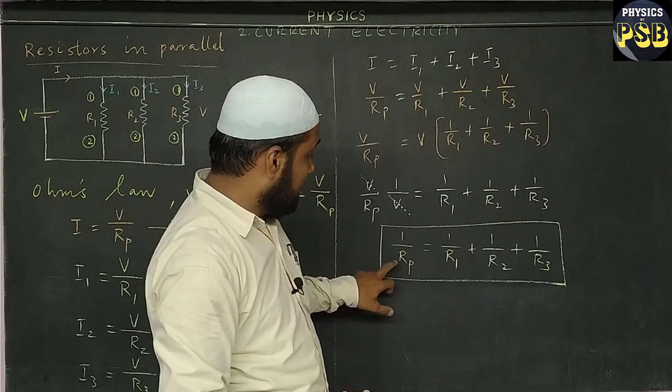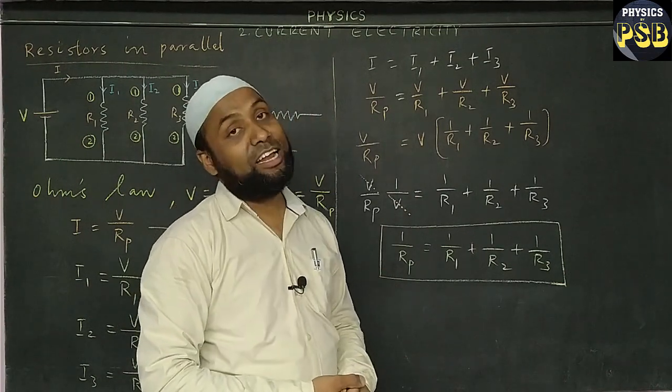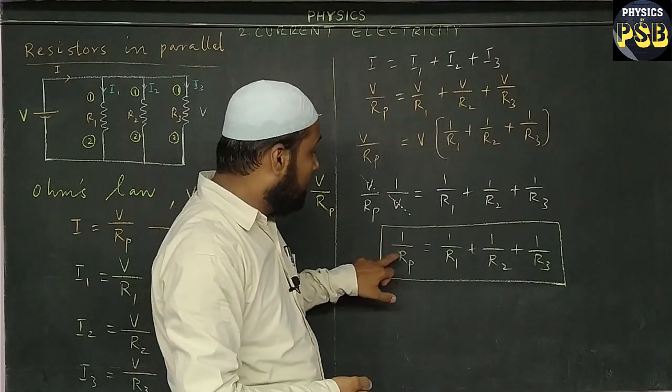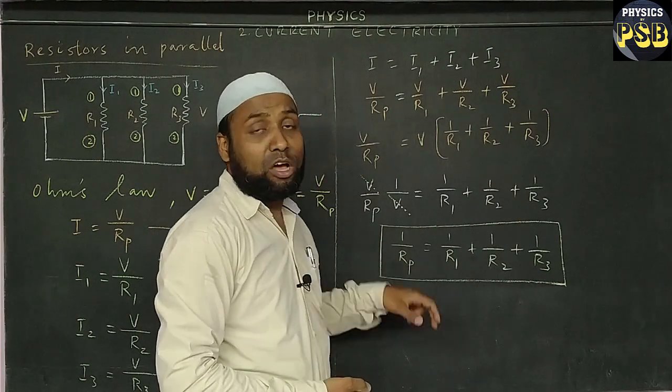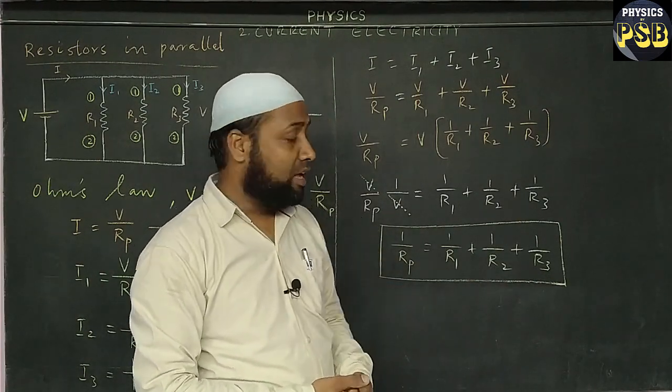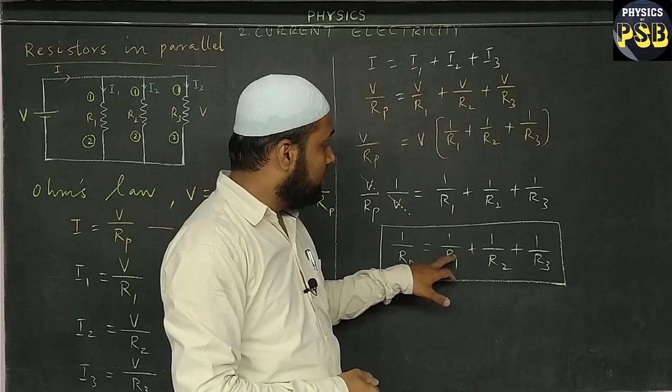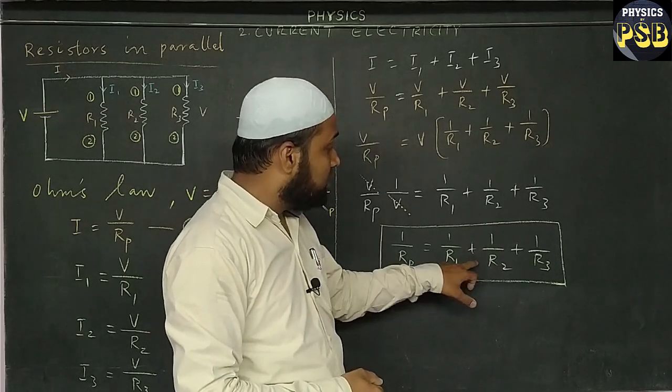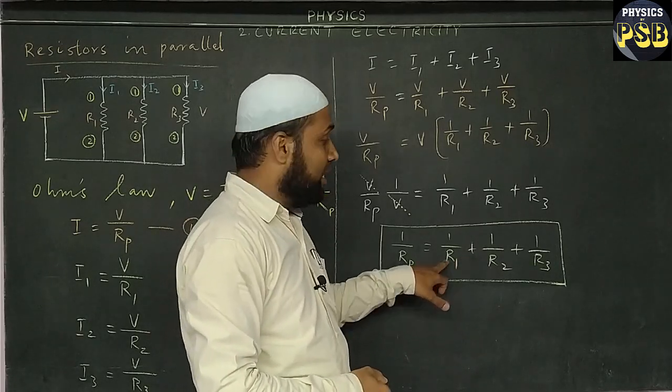If you look at this equation, it says that the reciprocal of total resistance of resistors connected in parallel is always equal to the sum of reciprocal of individual resistances.